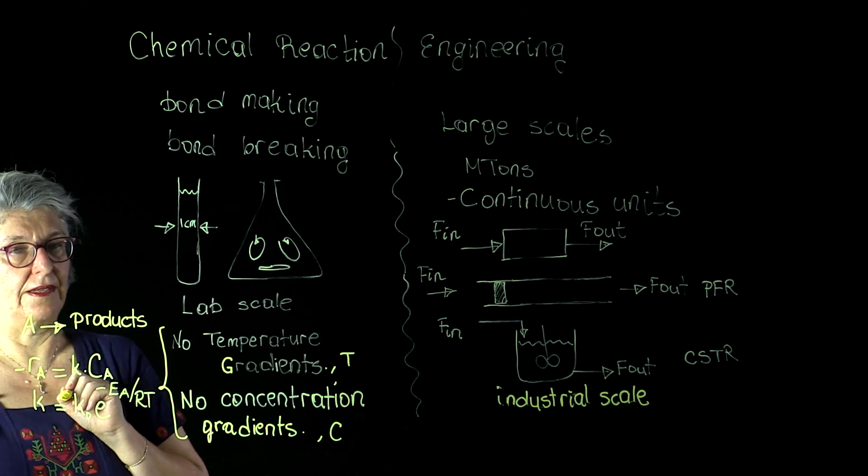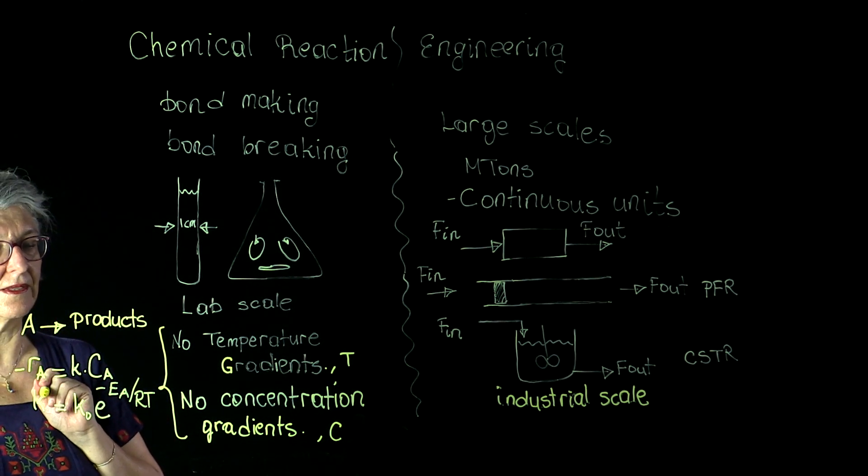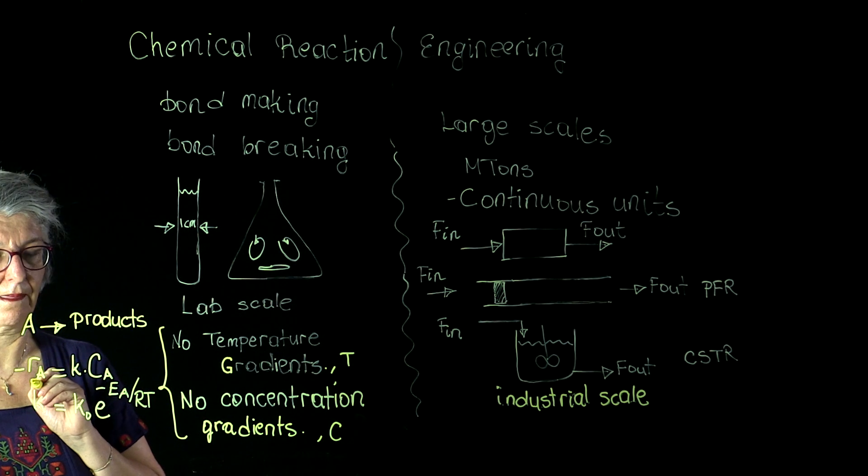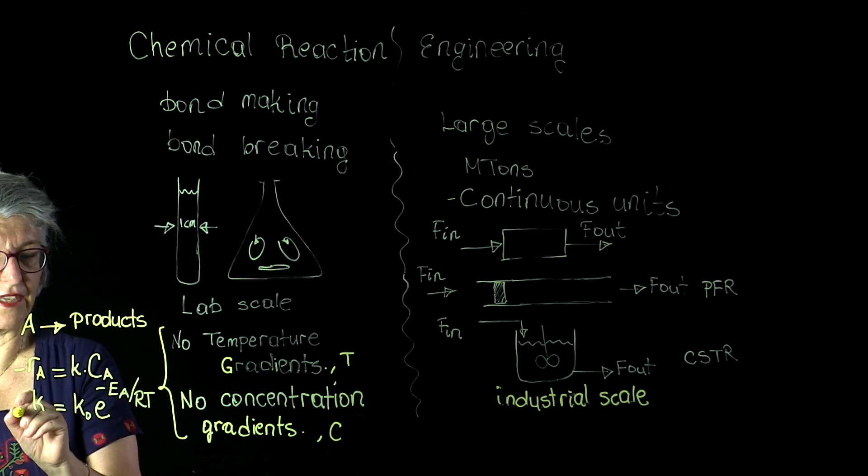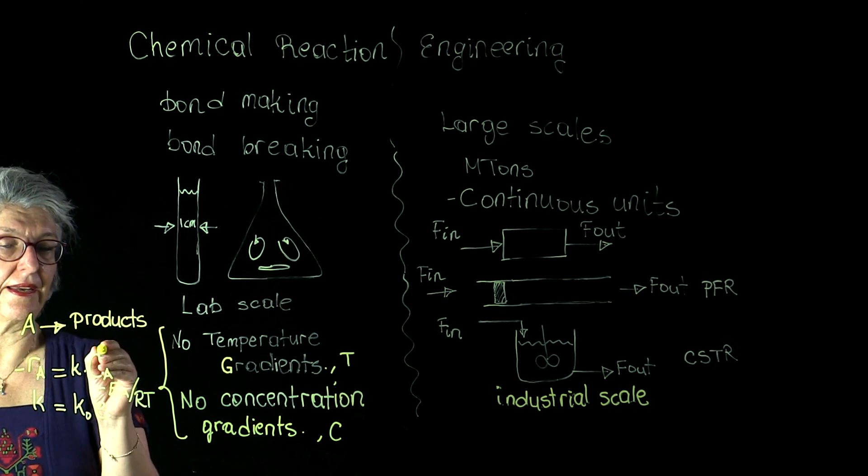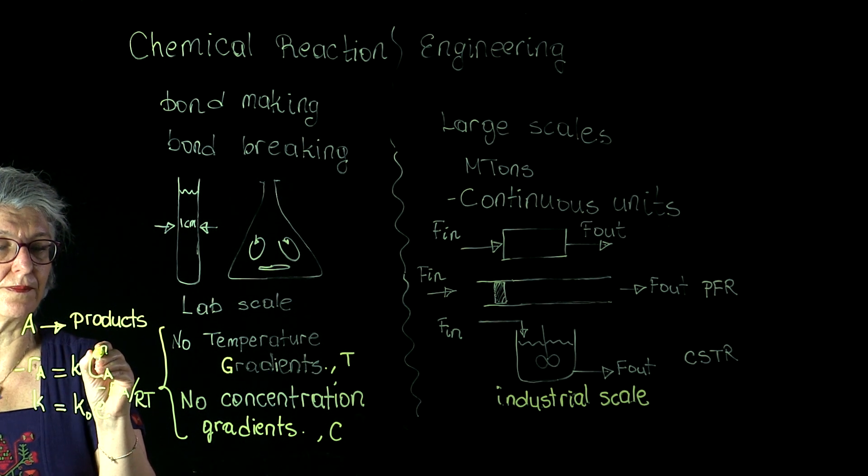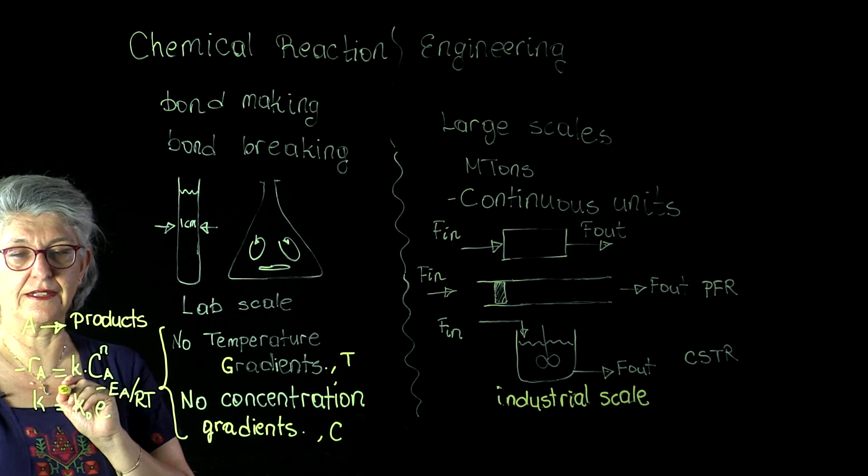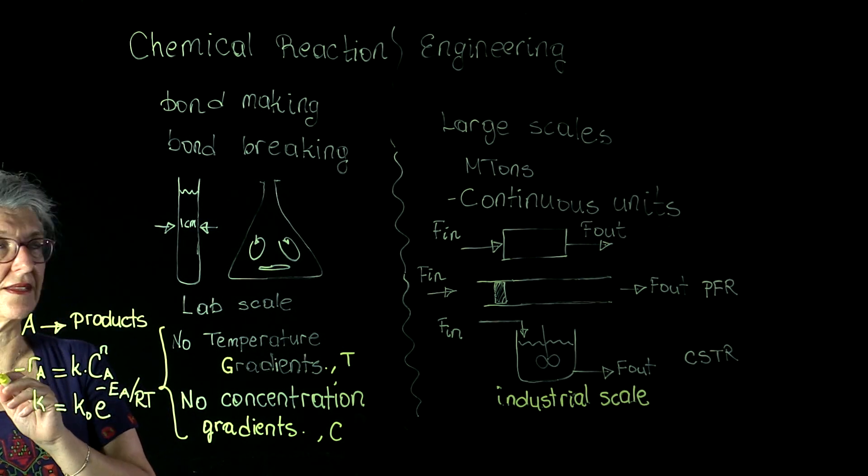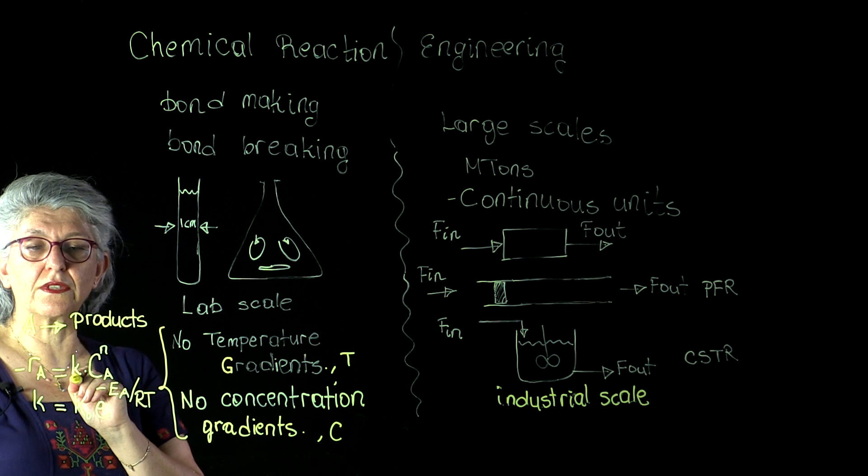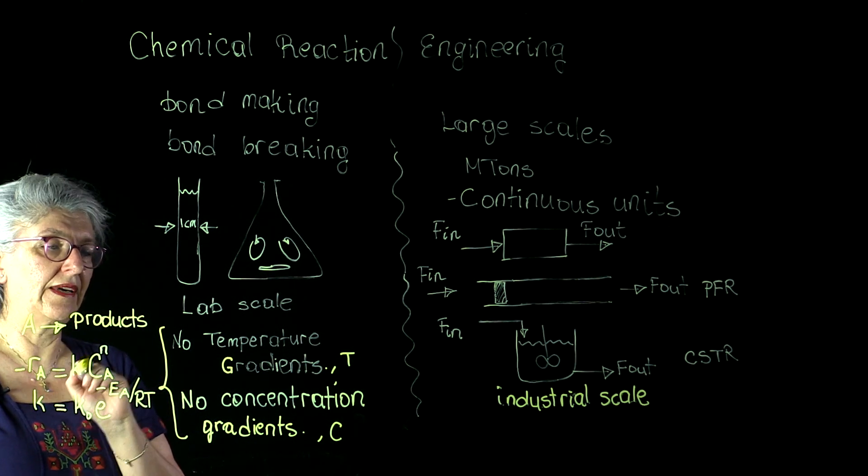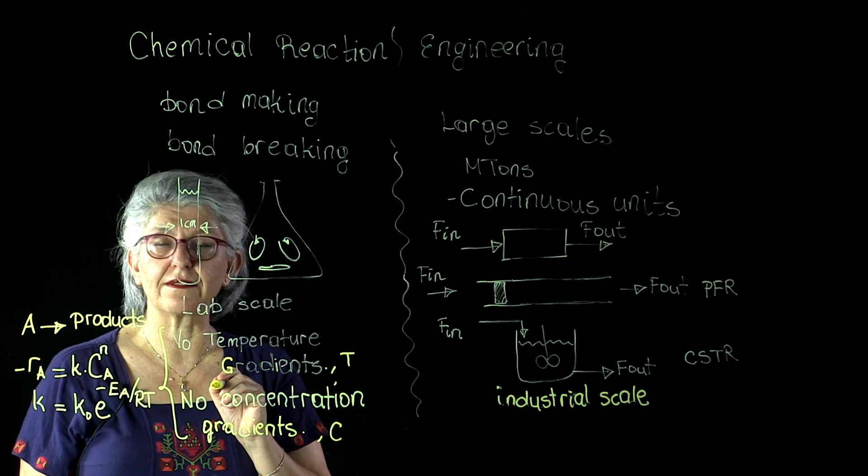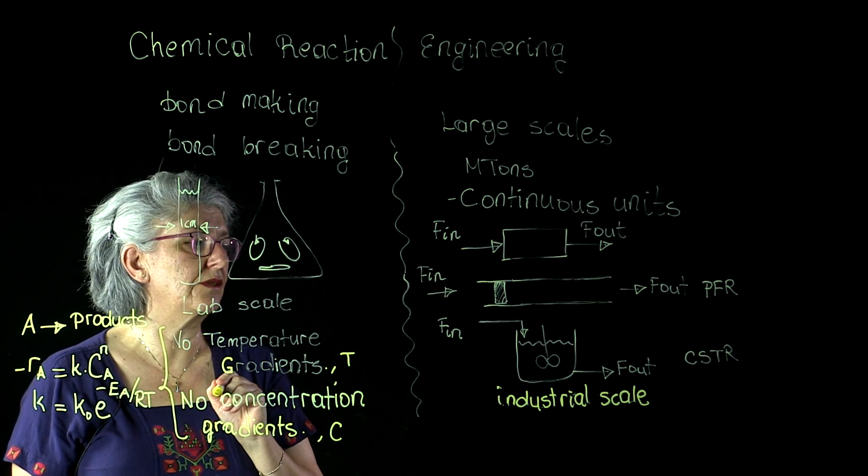the universal gas constant, and the temperature in the Kelvin scale. So this constitutive relationship is an empirical relationship, N is the order of the reaction, K is the rate constant. And we assume that there are no temperature and no concentration gradients under the conditions.